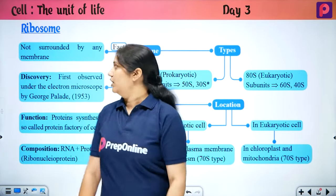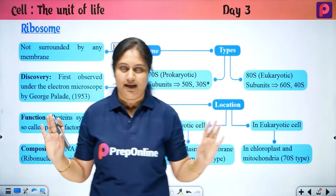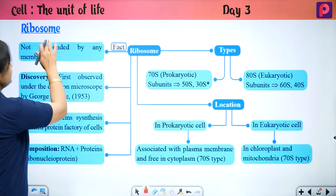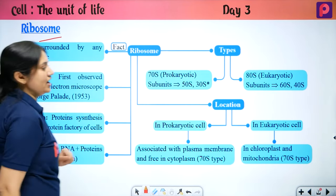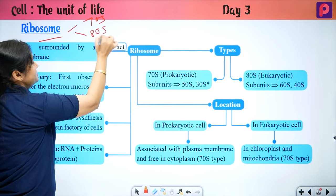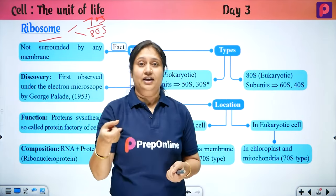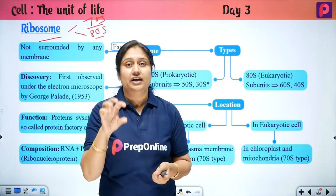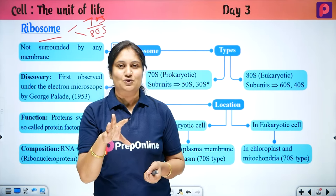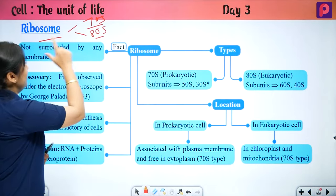The next organelle is the ribosome. Ribosome is very simple — no membrane is present in it. It contains only rRNA and protein. Ribosomes can be two types: 70S (present in prokaryotic cells) and 80S (present in eukaryotic cells). Remember that in eukaryotic cell organelles like mitochondria and chloroplast, 70S ribosomes are present.